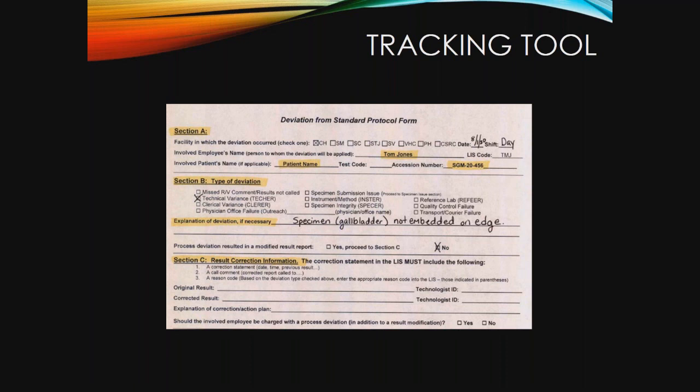I want to highlight a few of the fields before we move on. You'll notice the title is 'Deviation from Standard Protocol Form' — the intent was to eliminate the perception that this process is punitive; we tried to get away from calling it an error tracking form so that employees would not shy away from filling it out. Section A includes basic identification information: facility, date, shift in which the incident occurred, the employee involved and their lab information system code, the patient name, corresponding test code, and session number. Section B allows us to classify the incident and give a brief explanation of what occurred — in this example, it's written as a technical variance where the specimen, a gallbladder, was not embedded on edge.